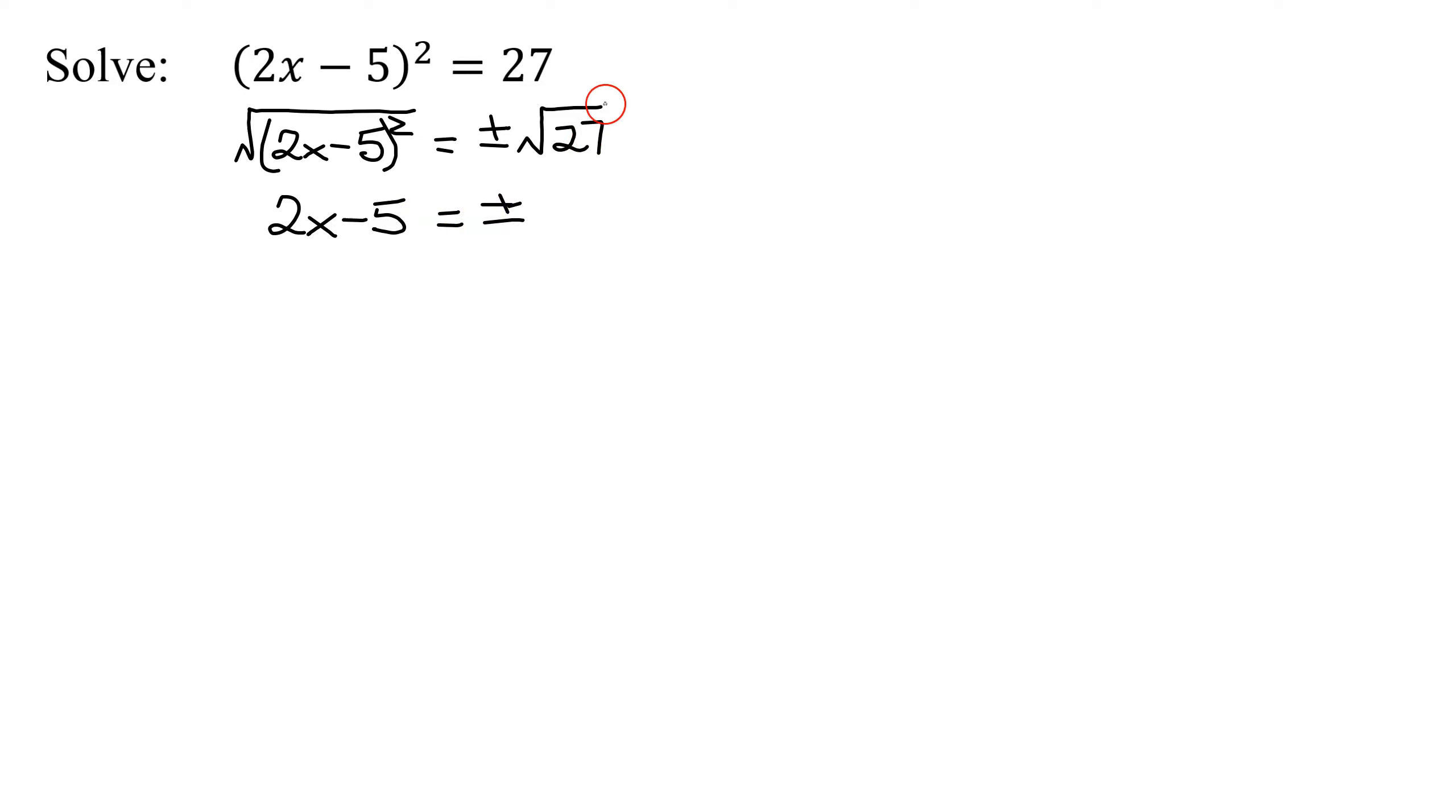Now I simplify √27. Since 27 is not a perfect square, factor it as 3 × 9. Since 9 is a perfect square and 3 is prime, I can write √27 as √(9 × 3).